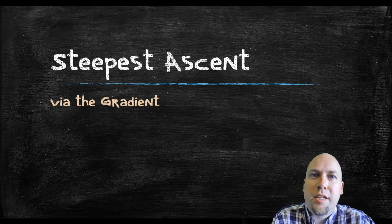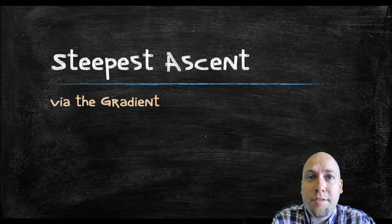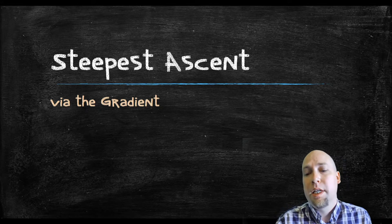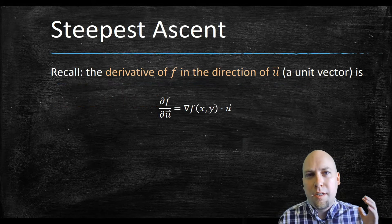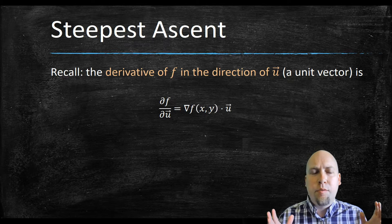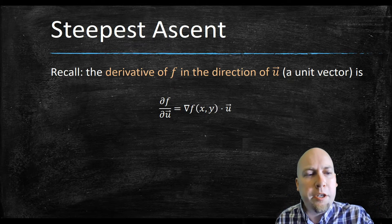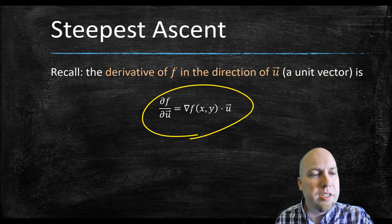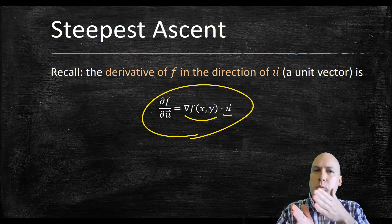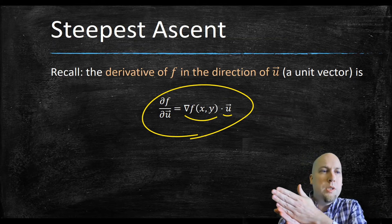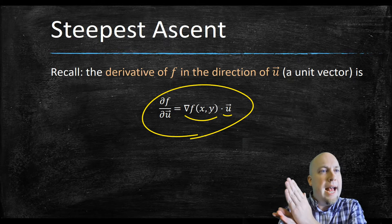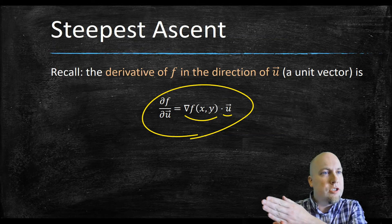My name is Nathan Johnston and today we're going to look at an application of the gradient and directional derivatives that we learned about in the previous lecture. Recall from last lecture that if we want to know about the derivative in a particular direction, we can use this formula here — the dot product of the gradient with a unit vector in whatever direction we're interested in. That tells us how steep the function is in that direction.